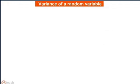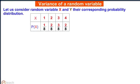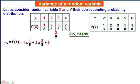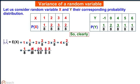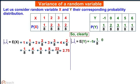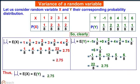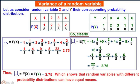Variance of a random variable. Let us consider random variables x and y and their corresponding probability distributions as shown. Clearly, mu which is equal to E(x) comes out to be equal to 2.75, and mu of E(y) also comes out to be equal to 2.75. This shows that random variables with different probability distributions can have equal means.